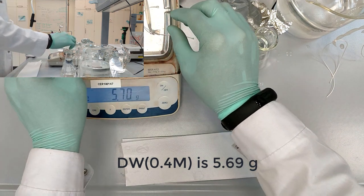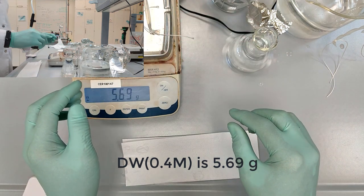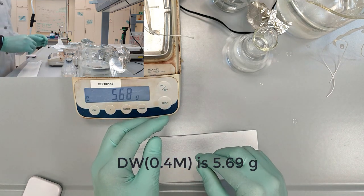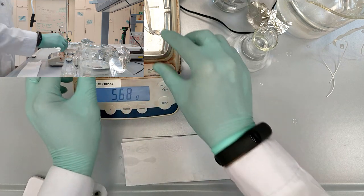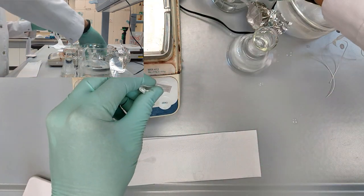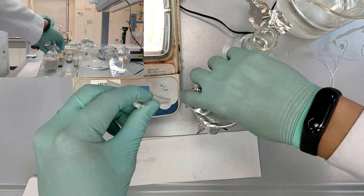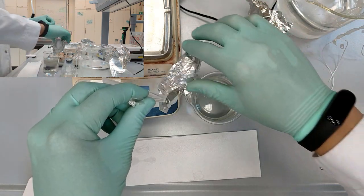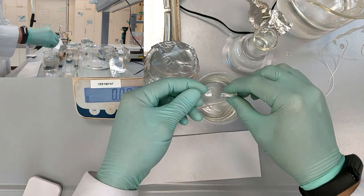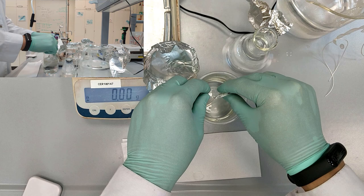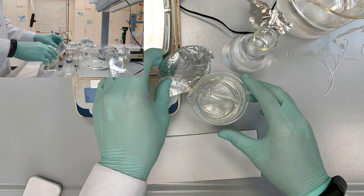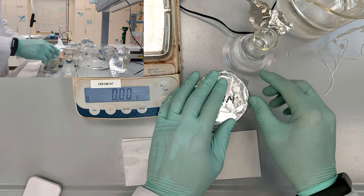The first tube that we are going to put in the 0.4 concentration solution is 5.69 grams. So we take the appropriate solution and try to dip the dialysis tube so that the solution covers it.